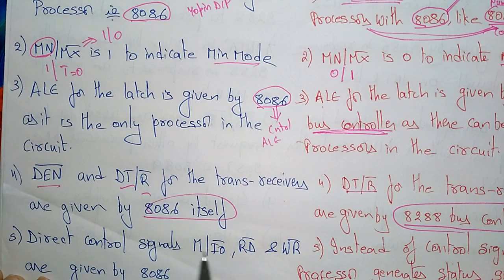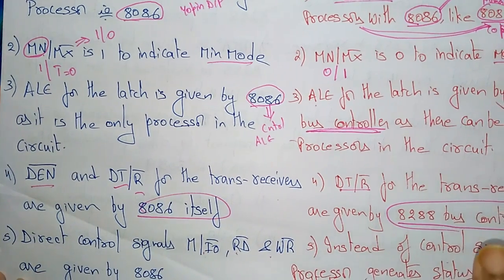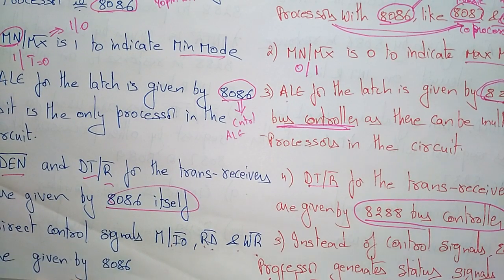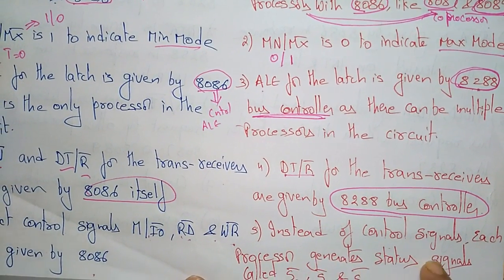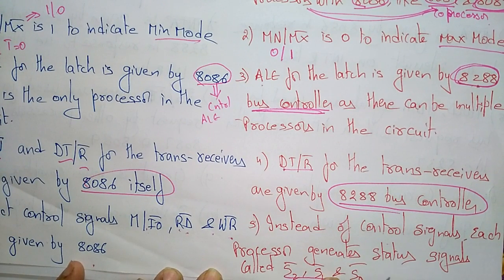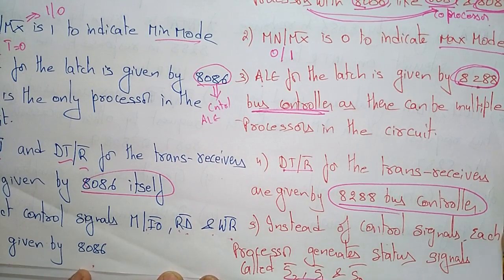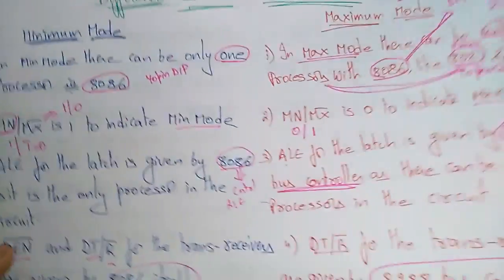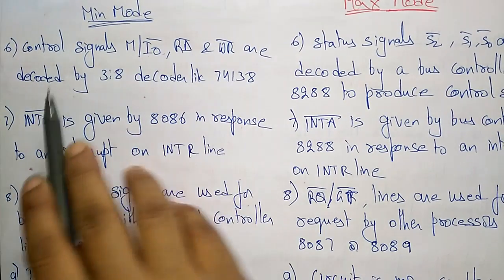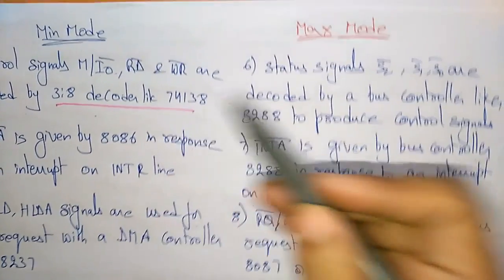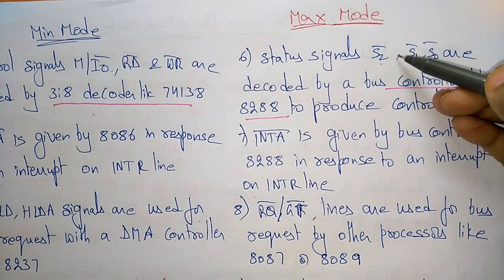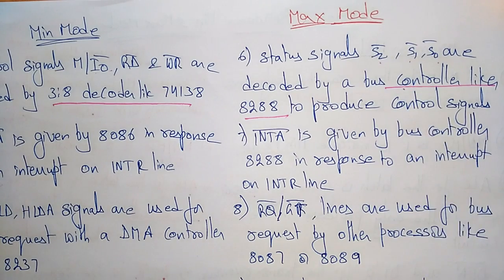In minimum mode, direct control signals — M/IO bar, Read, and Write — are given by the 8086. All control signals, whether for memory or I/O operations, read or write, are directly driven by the 8086 microprocessor. In maximum mode, instead of control signals, each processor generates status signals. The status signals S2 bar, S1 bar, and S0 are decoded by the bus controller — like the 8288 — to produce the required control signals.